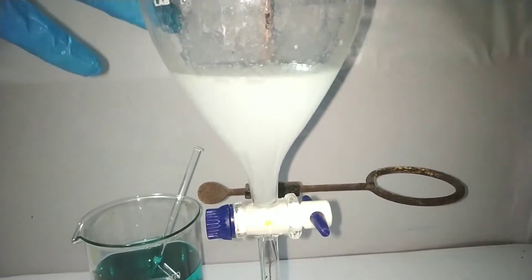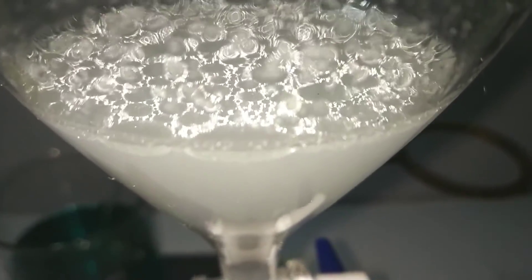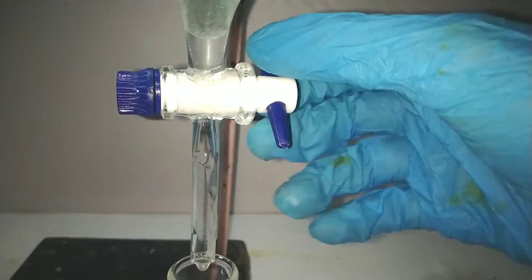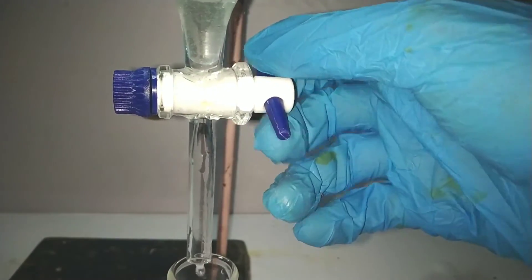After some time, we see that aniline starts to separate out as an oily layer on the top. Now we can take the lower aqueous layer and discard that, and the upper layer, that is the aniline.